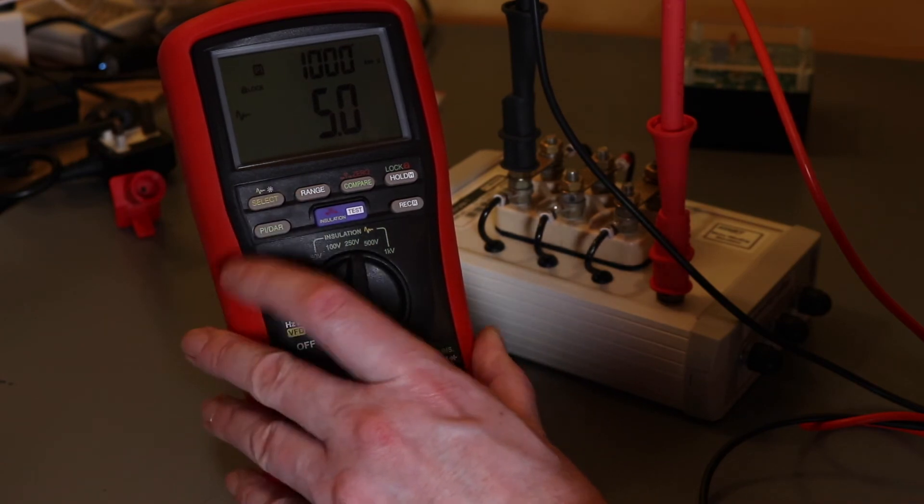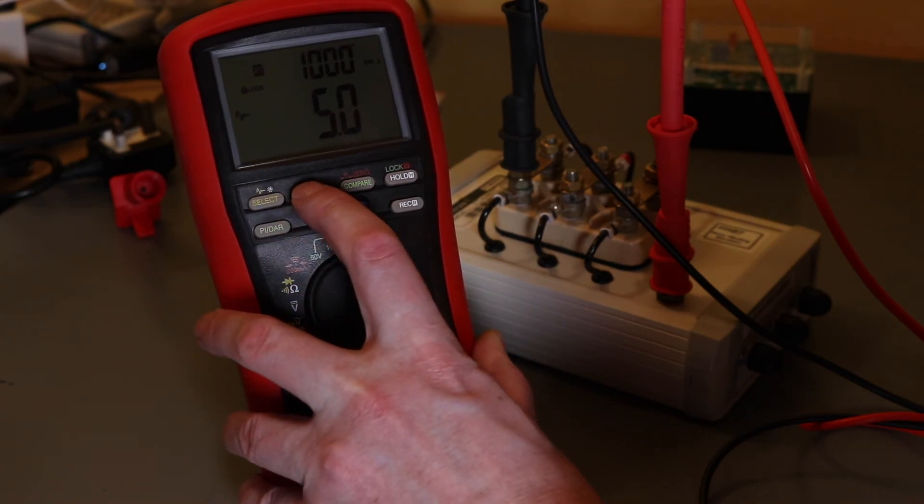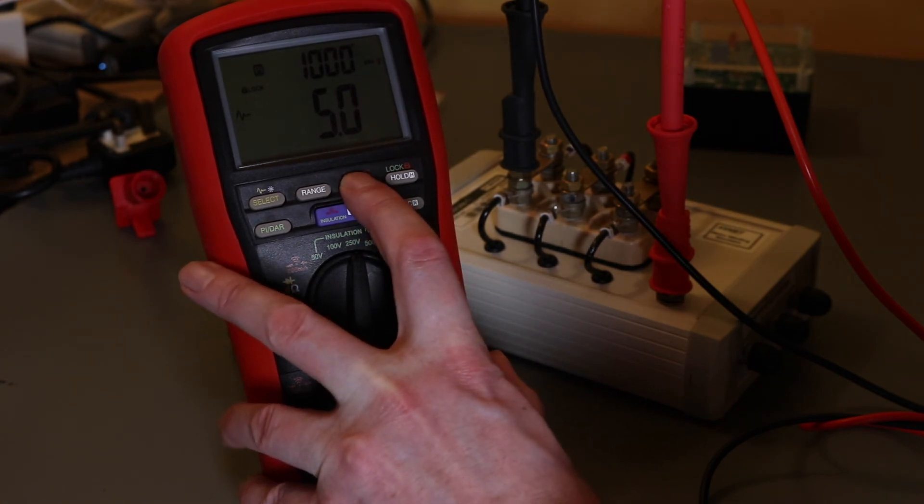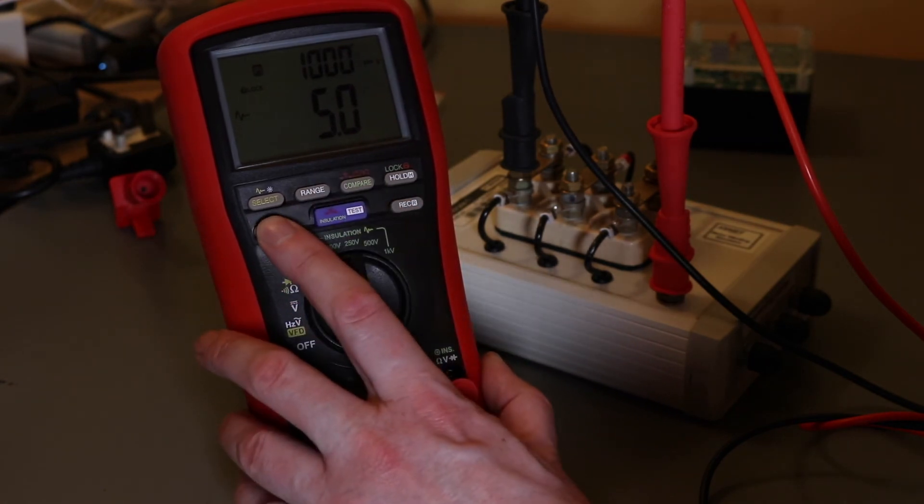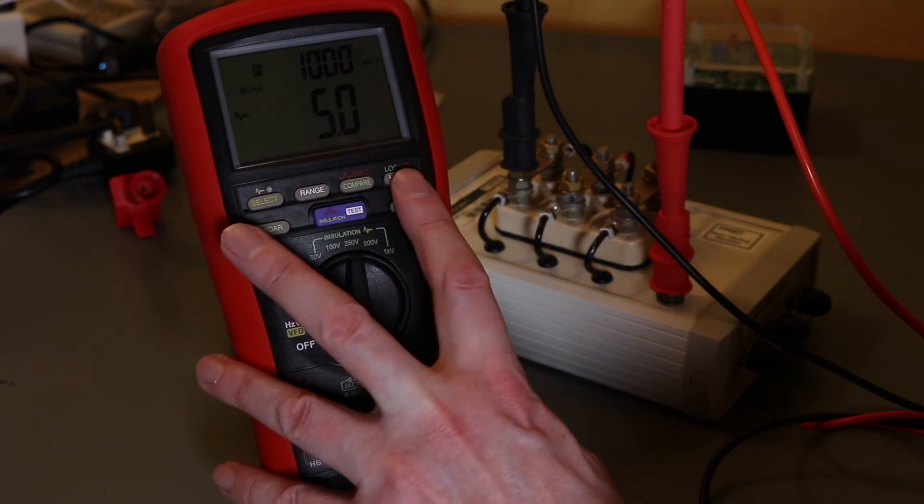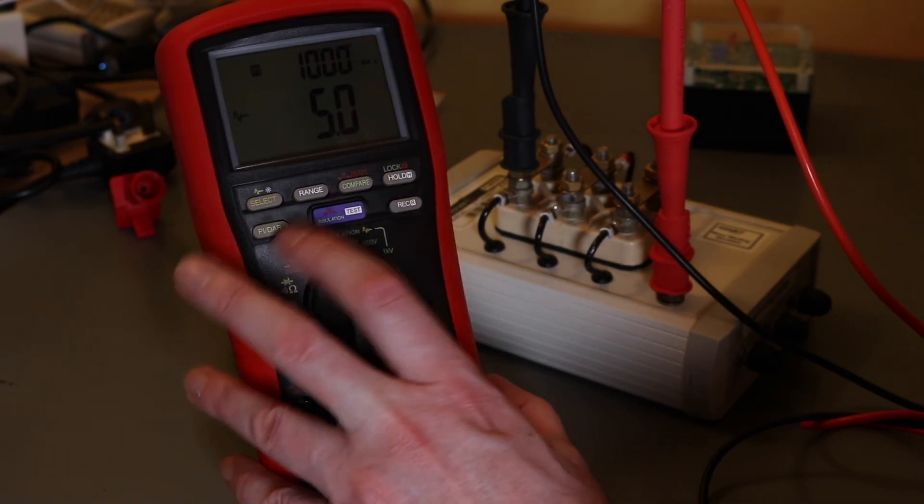Here you see the select button doesn't work on anything. Range doesn't do anything. Compare doesn't do anything. Pi DAR just changes it between the Pi and the DAR. Record doesn't do anything. Hold will just take you off lock.